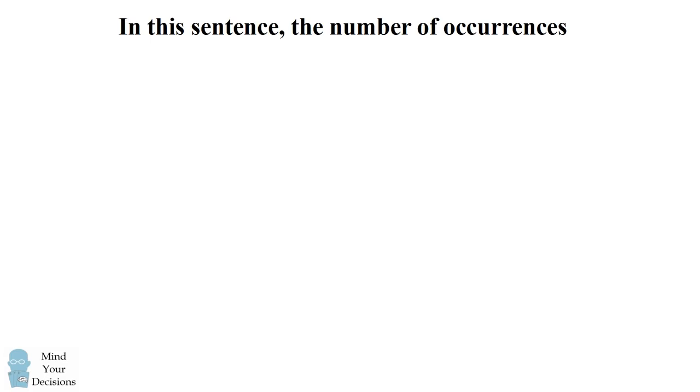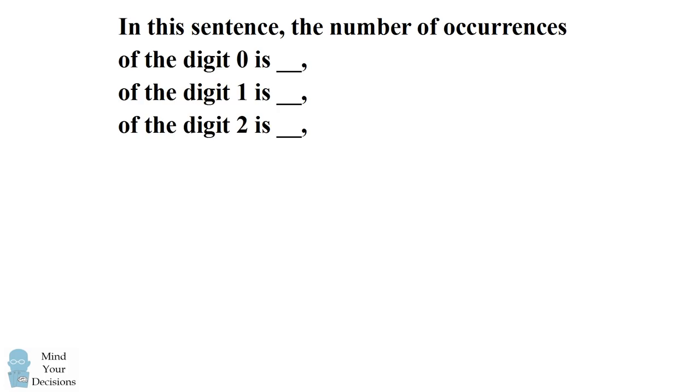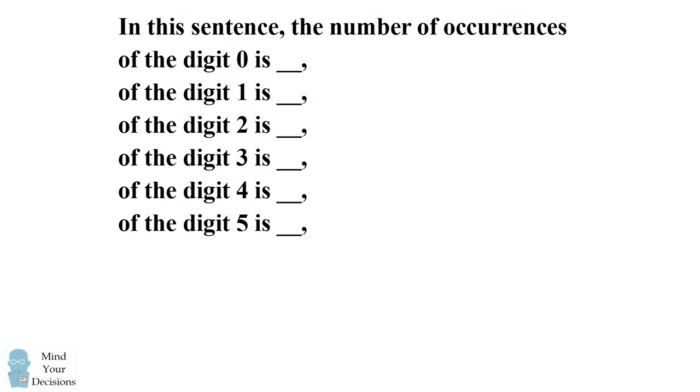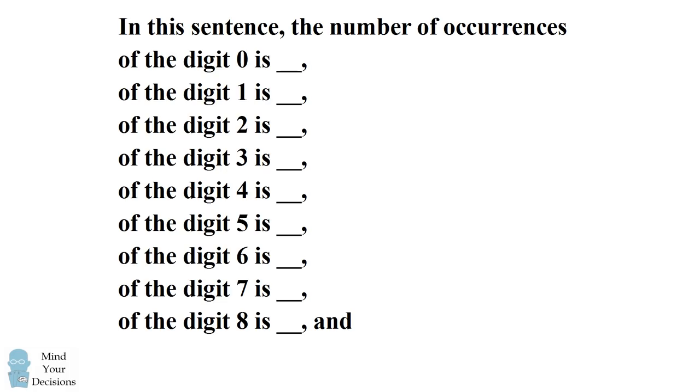In this sentence, the number of occurrences of the digit 0 is blank, of the digit 1 is blank, of the digit 2 is blank, of the digit 3 is blank, of the digit 4 is blank, of the digit 5 is blank, of the digit 6 is blank, of the digit 7 is blank, of the digit 8 is blank, and of the digit 9 is blank.